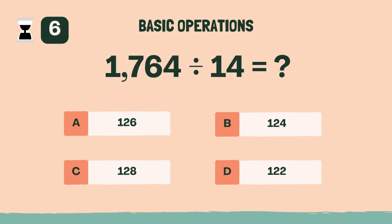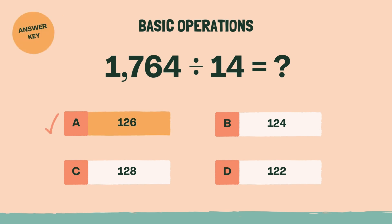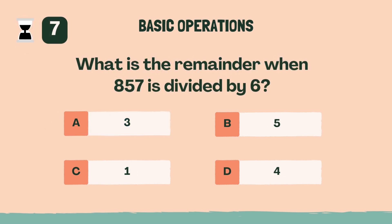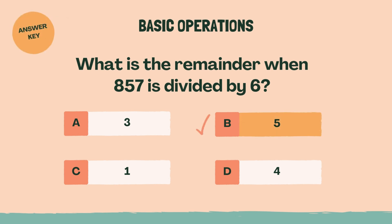What is 1,764 divided by 14? The answer is A, 126. What is the remainder when 857 is divided by 6? The answer is B, 5.